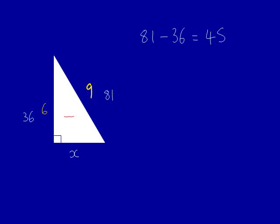81 take away 36 is 45. Now we've got to square root it. Therefore we write square root 45 as I've shown here. The answer is 6.7 which we've worked out on a calculator.